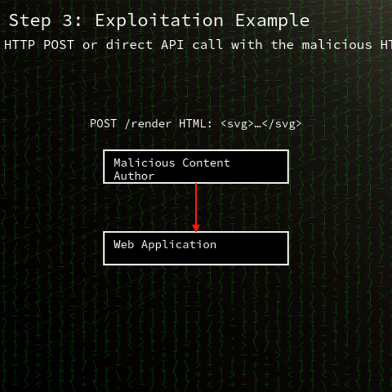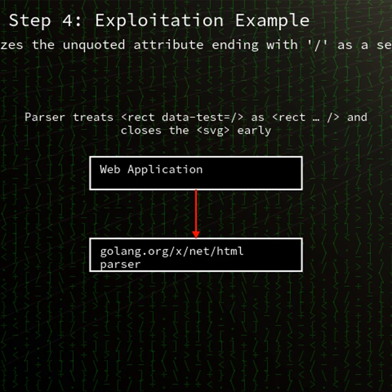CVE-2025-22872 is classified under CWE-79, improper neutralization of input during web page generation. It's not a buffer overflow or memory corruption, but rather an HTML tokenization logic error. By misidentifying tags with unquoted attribute values ending in a slash as self-closing, it alters the document object model structure in foreign content contexts.